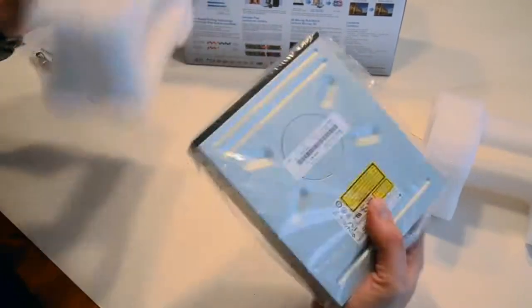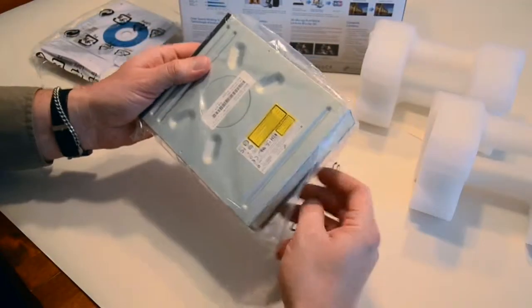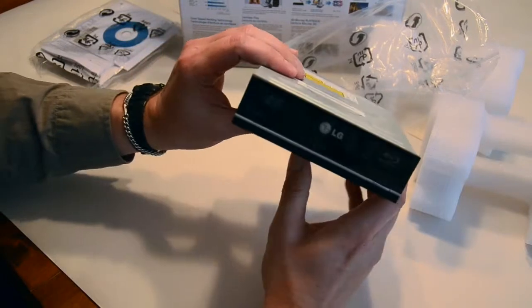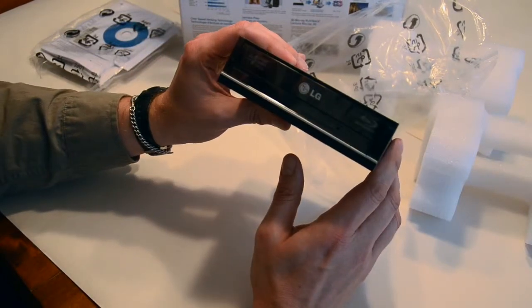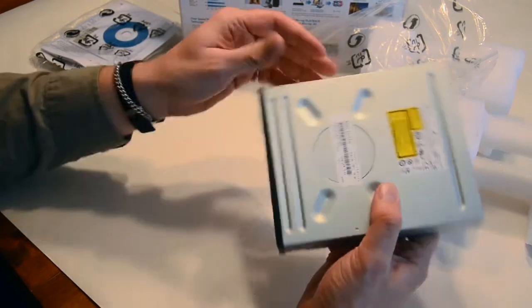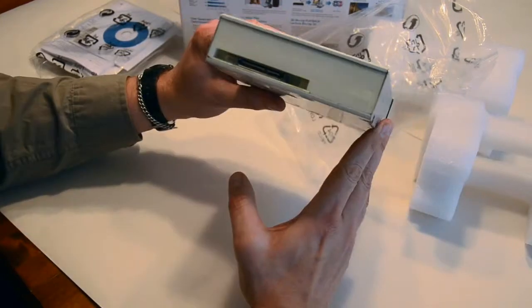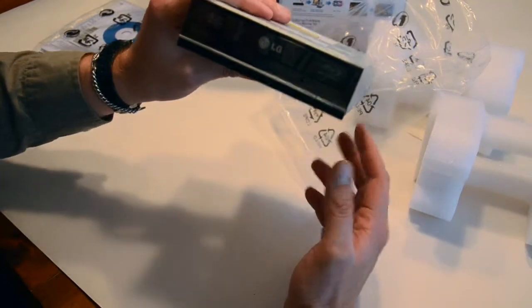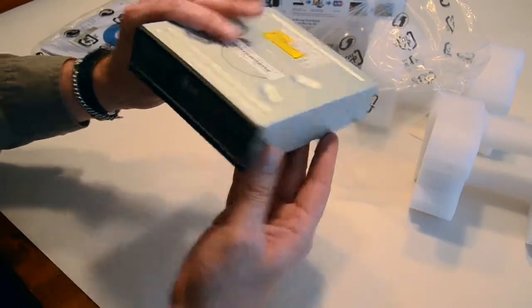These things are fairly well contained. There's the drive itself - again, fairly normal looking. Blu-ray support, that's mainly why I got it. There we go, so that'll be the disk drive for the hackintosh.